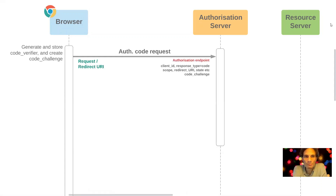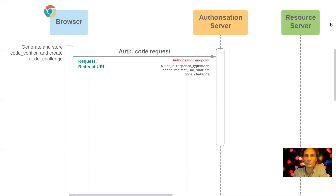The browser starts the flow with an authorization code request to the authorization endpoint of the auth server. This is an HTTP request where the client ID is included to indicate which application is involved. The response type is set to 'code' to indicate that an auth code is required rather than a token, and the scope is set to whatever scopes are required for the client's integration with the resource server.